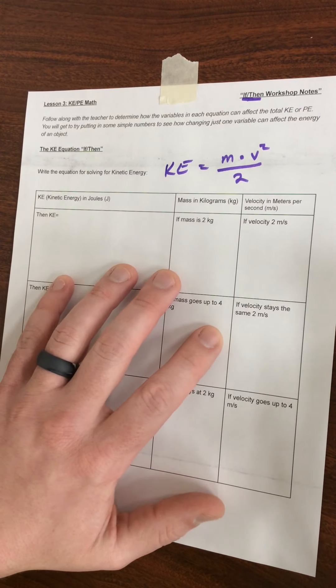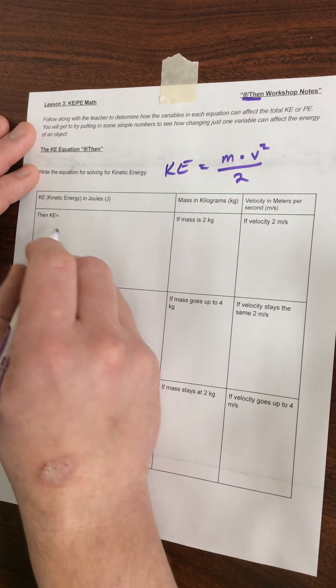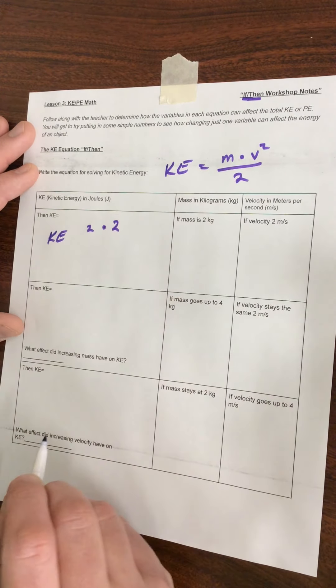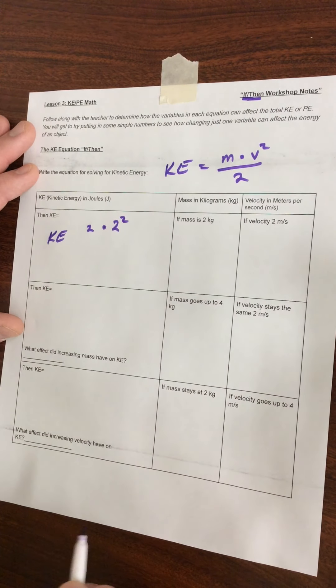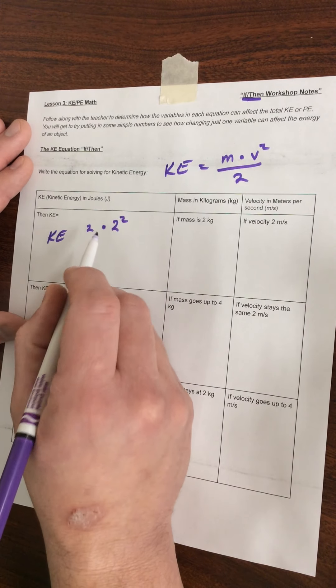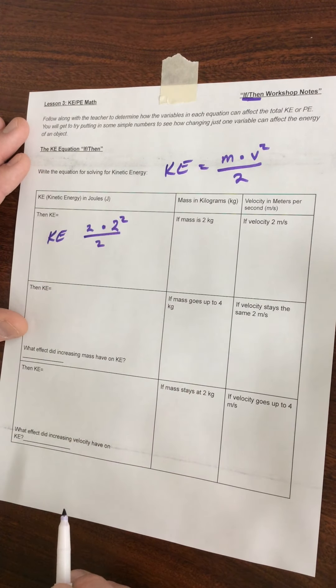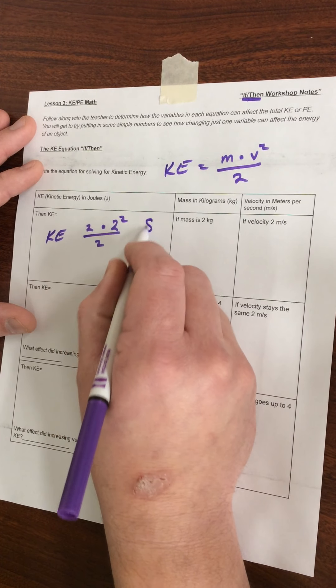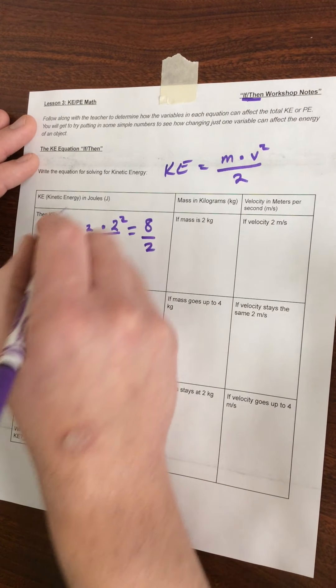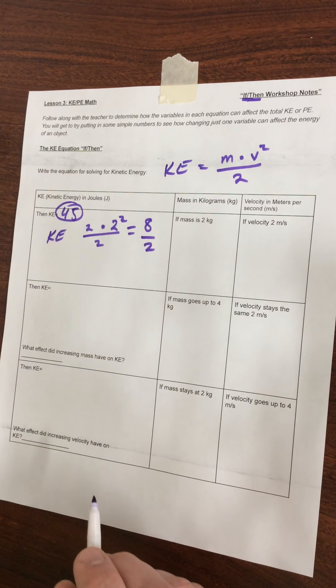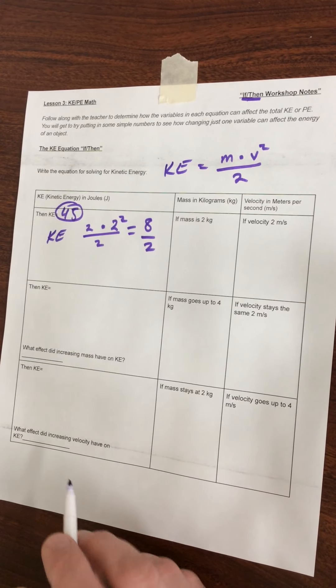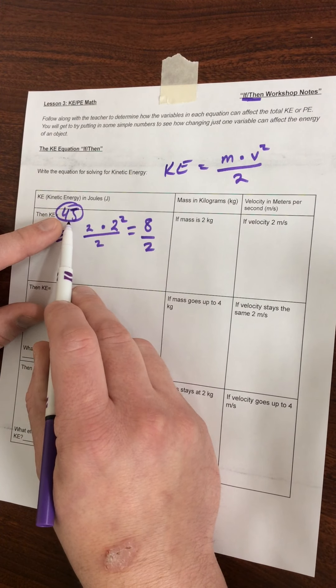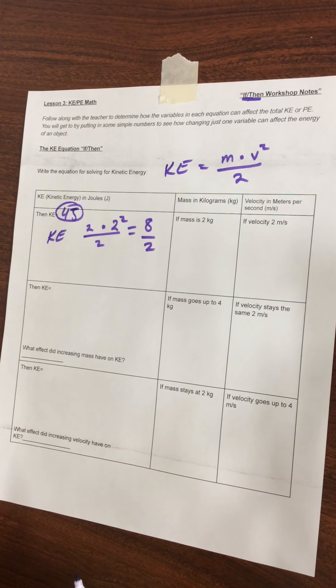Starting with kinetic energy, we're going to start with a body that has a mass of two kilograms and a velocity of two meters per second. But we have to make sure that we square our velocity, otherwise you'll get the wrong answer. We're going to divide that by two. Two squared is four, four times two is eight, eight divided by two gives us a total of four joules. Joules are the units that we're going to use for both potential and kinetic energy, and we abbreviate it with a capital J.